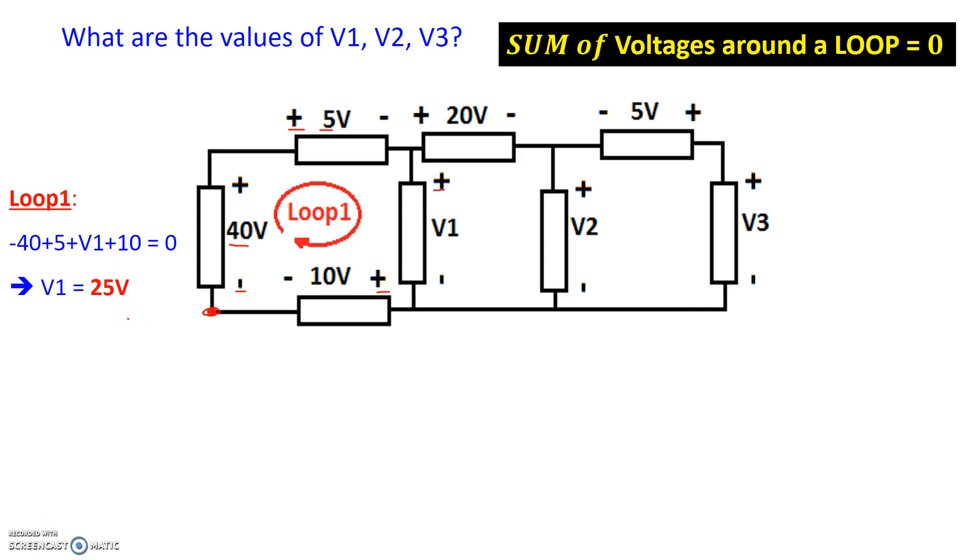Using that exact same approach, I can walk around the second loop. Again, I have a clockwise loop in this case, I am starting at this node right here. So starting at that node, what I see is basically on loop two, I see negative V1, positive 20 volts, positive V2, and I end up at the back of the loop. So minus V1 plus 20 plus V2 is equal to zero. We just found the value of V1 right here, so we can substitute that. So using that, V2 equals V1 minus 20, so V1 was 25, 25 minus 20 gives us 5 volts, so we have 5 volts right here.